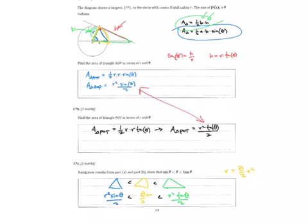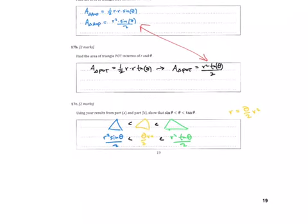And so if I had theta over two R squared, notice what I can drop out of all three of these. I can just reduce out an R squared over two, and hence I am left with sine of theta less than theta less than tan theta.